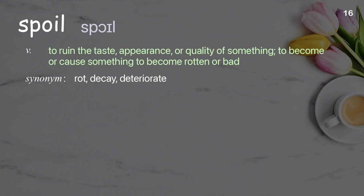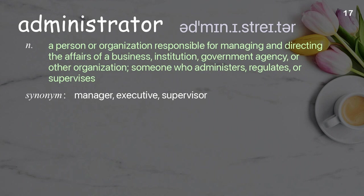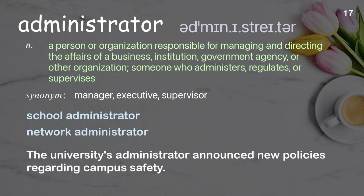Spoil: to ruin the taste, appearance, or quality of something; to become or cause something to become rotten or bad. Examples: spoil a person's sport, spoil the surprise. If you leave the milk out of the refrigerator for too long, it will spoil. Administrator: a person or organization responsible for managing and directing the affairs of a business, institution, or other organization; someone who administers, regulates, or supervises. Examples: school administrator, network administrator. The university's administrator announced new policies regarding campus safety.